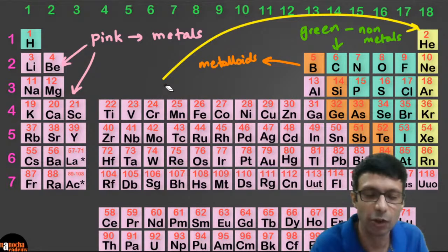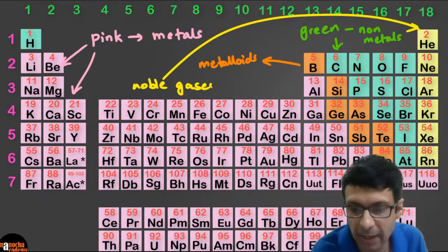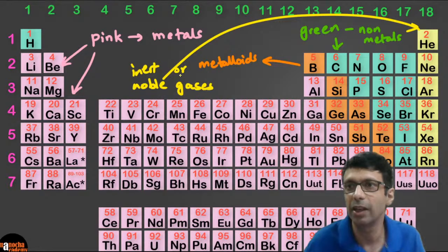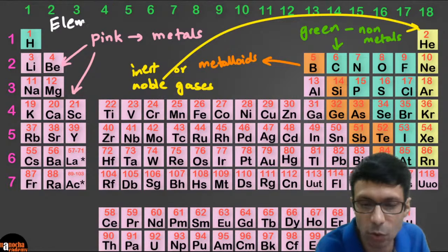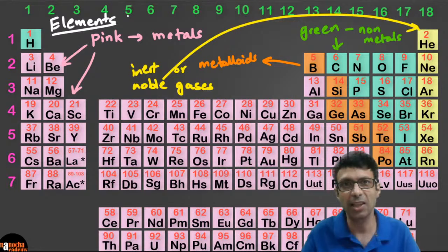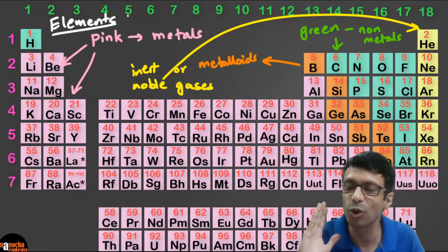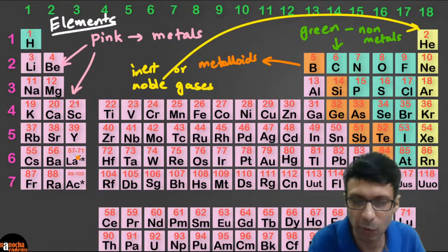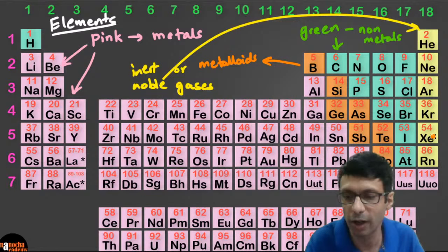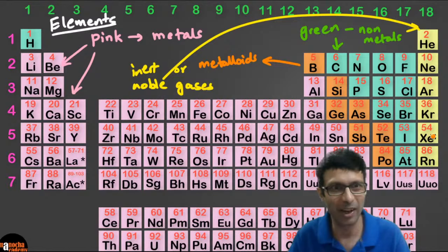The yellow ones are the noble gases, also called inert gases. They are very unreactive — so noble they don't want to react with anybody. Please remember: we are talking about elements only — metals, non-metals, metalloids, and inert gases.